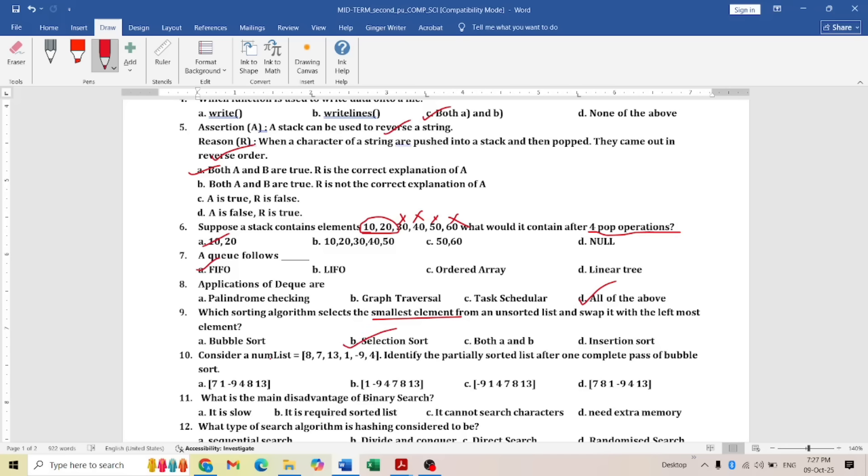Next, consider a number list: 8, 7, 13, 1. Identify the partially sorted list after completing a pass of bubble sort. In bubble sort, you have to identify the largest number. The largest number should come at the last. Here, if you see all the answers, you'll have 13 as the last. Now, 8 is compared with 7, so 7 will come to the first position. So 7 and 8 is the answer.